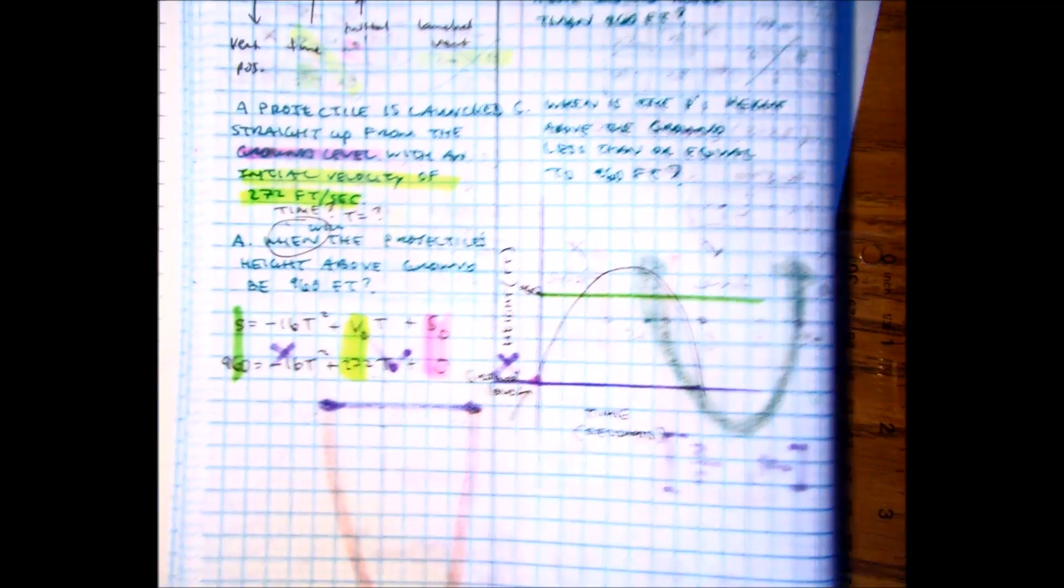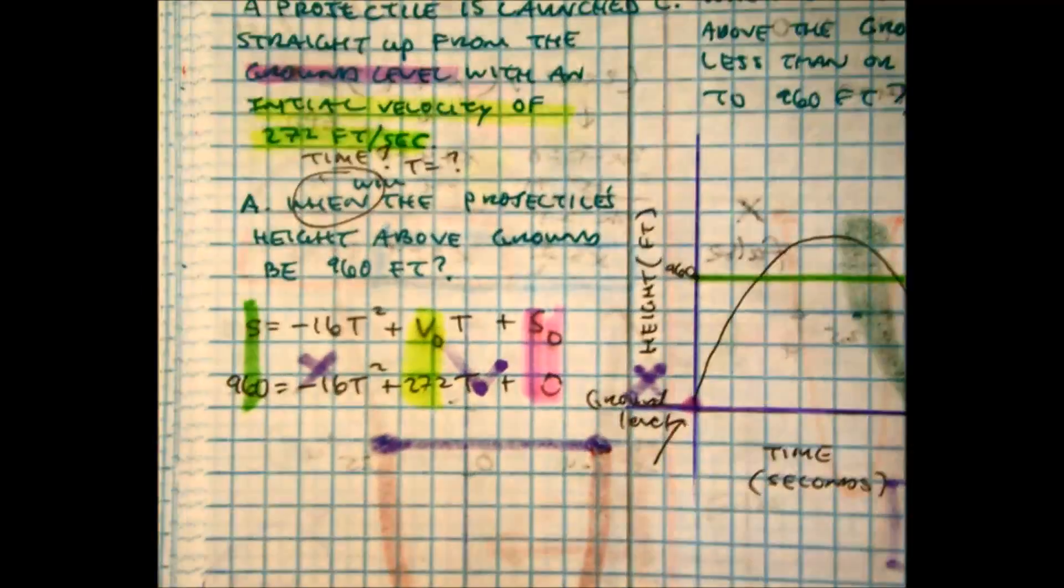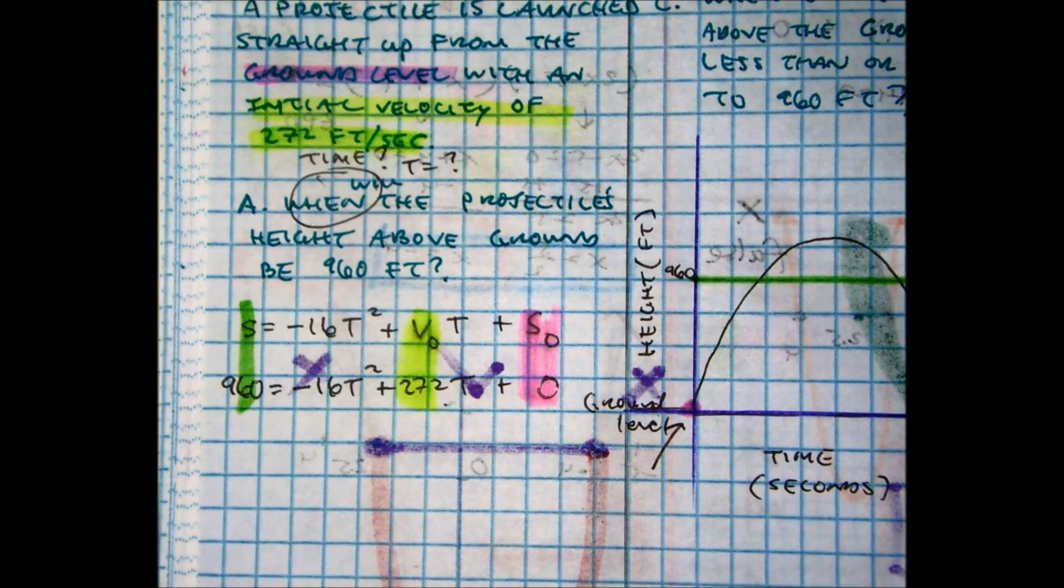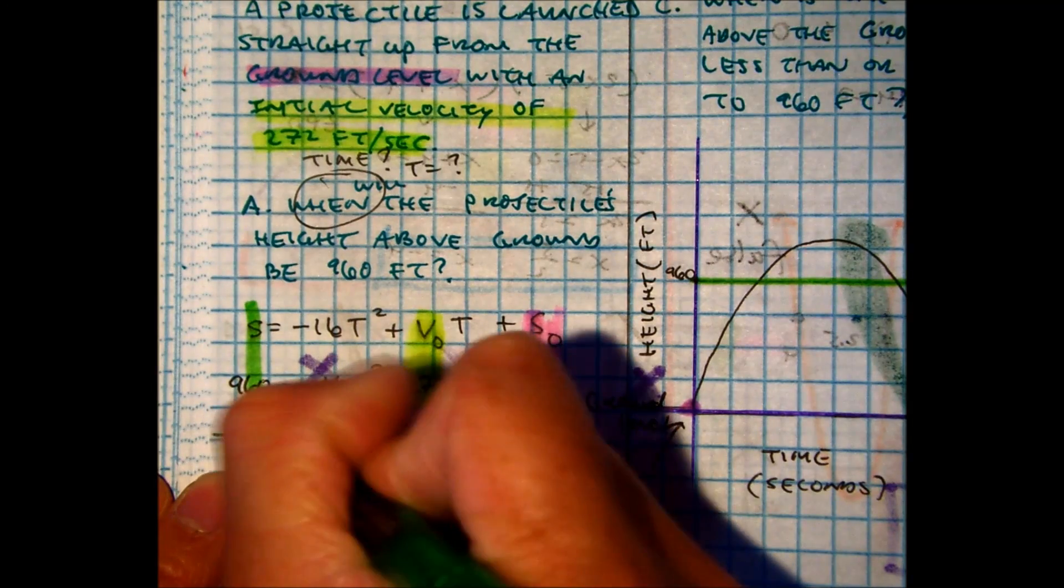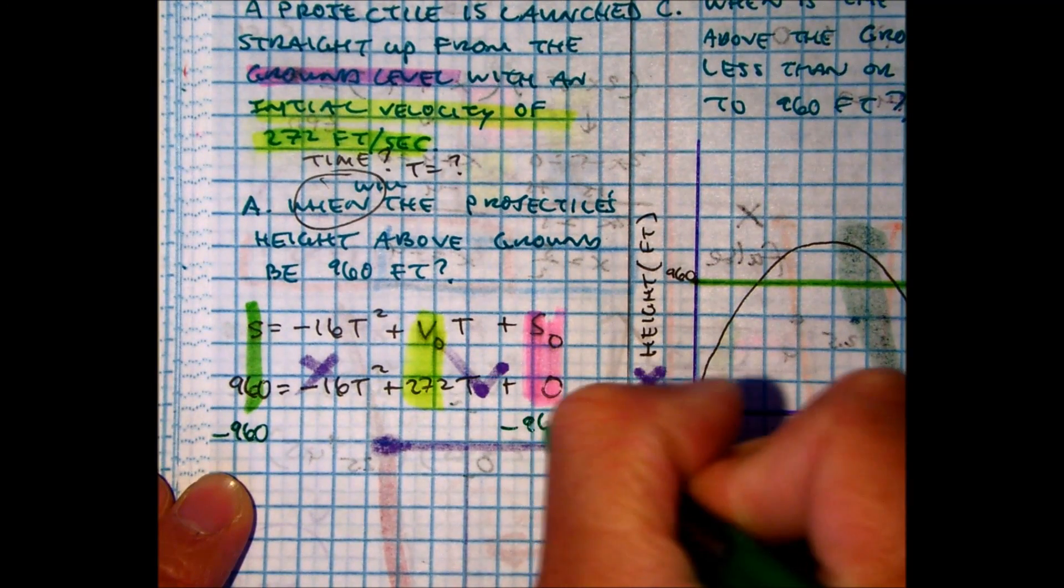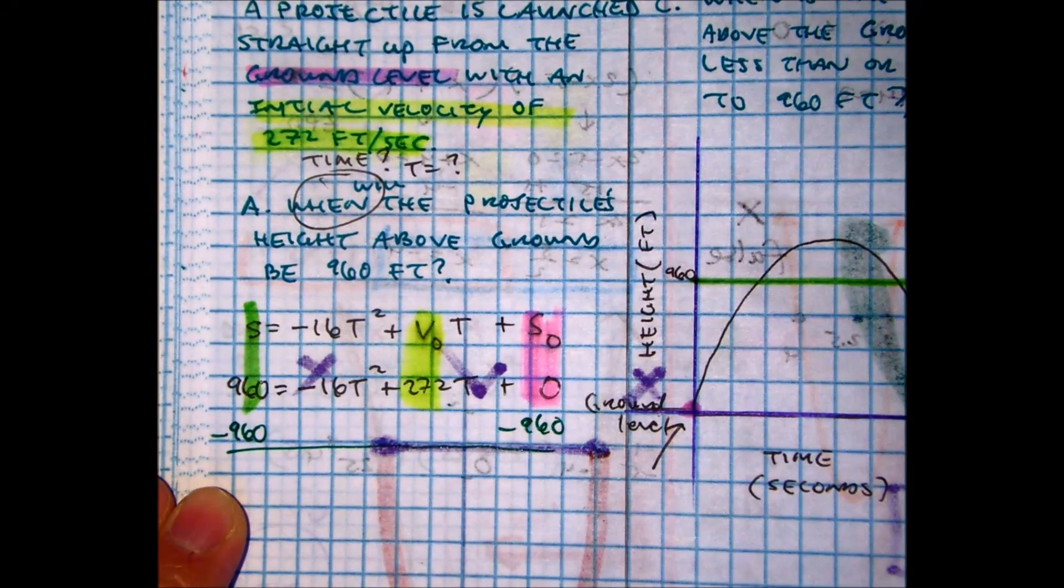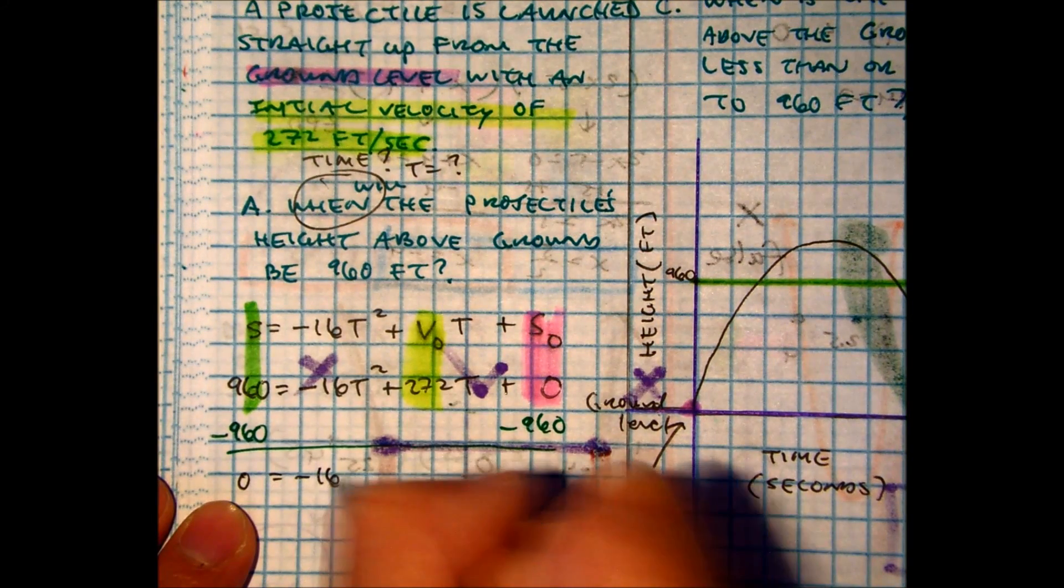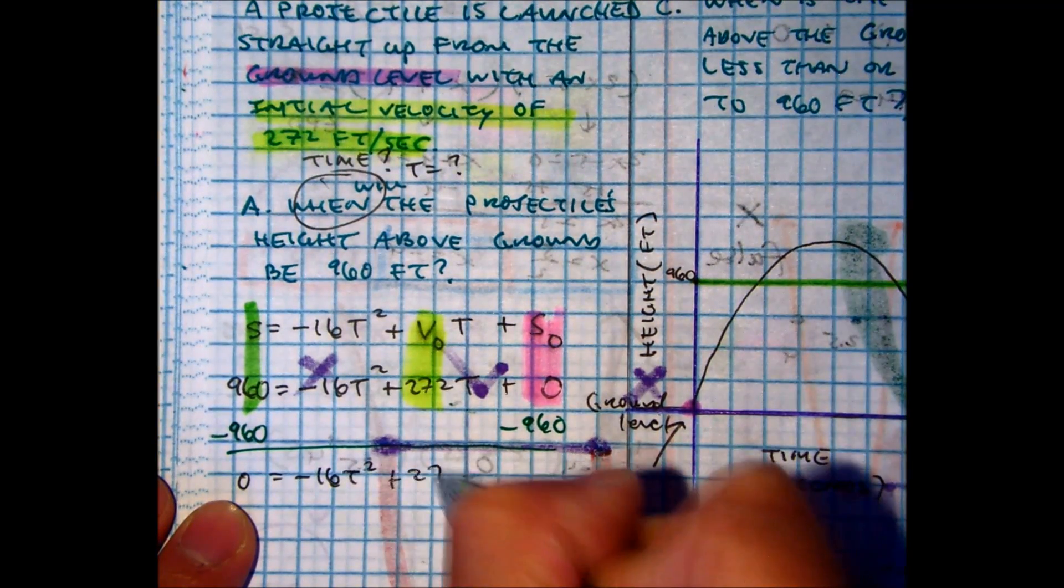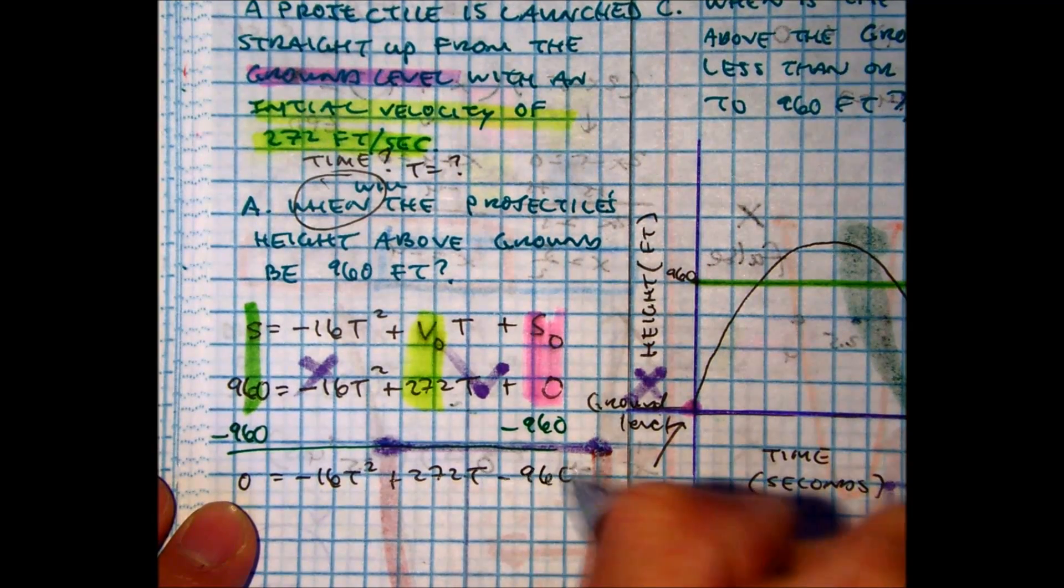Well, all I have here is just the quadratics. So I'm going to go ahead and subtract 960. So I have zero equals negative 16T squared plus 272T minus 960.